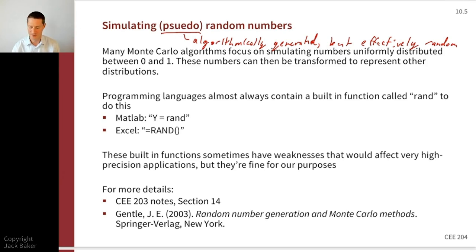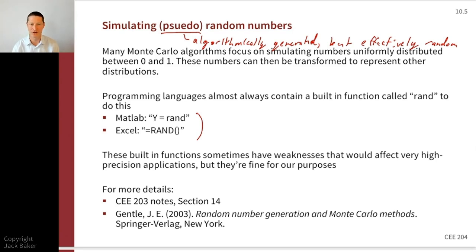Most algorithms focus on generating uniform random numbers between zero and one, and then we transform those to have some other distribution. This is similar to the backwards transformations we've been using in class. MATLAB, Excel, Python, and any software package will have a function typically called RAND that generates a uniform random number between zero and one. For high-precision applications, the algorithm might matter, but for anything in this class they work perfectly well.